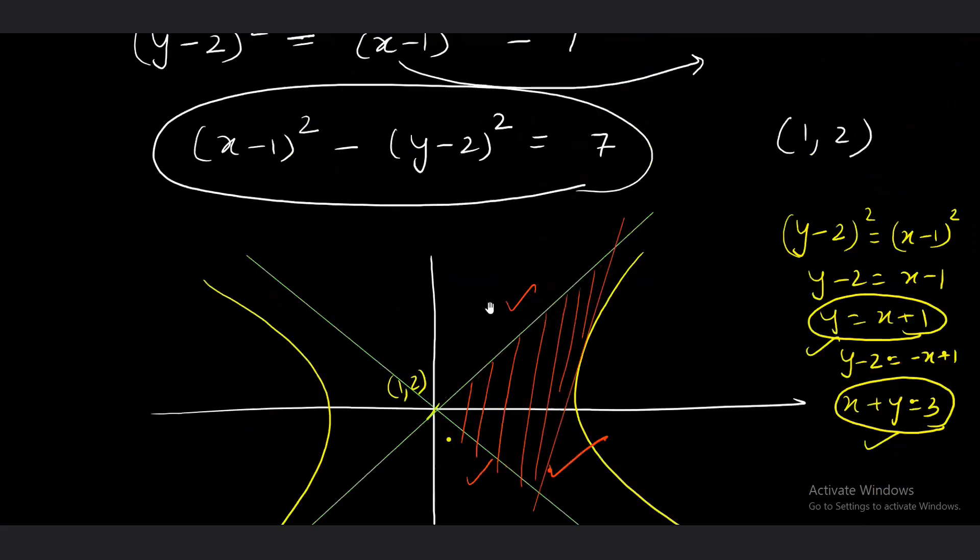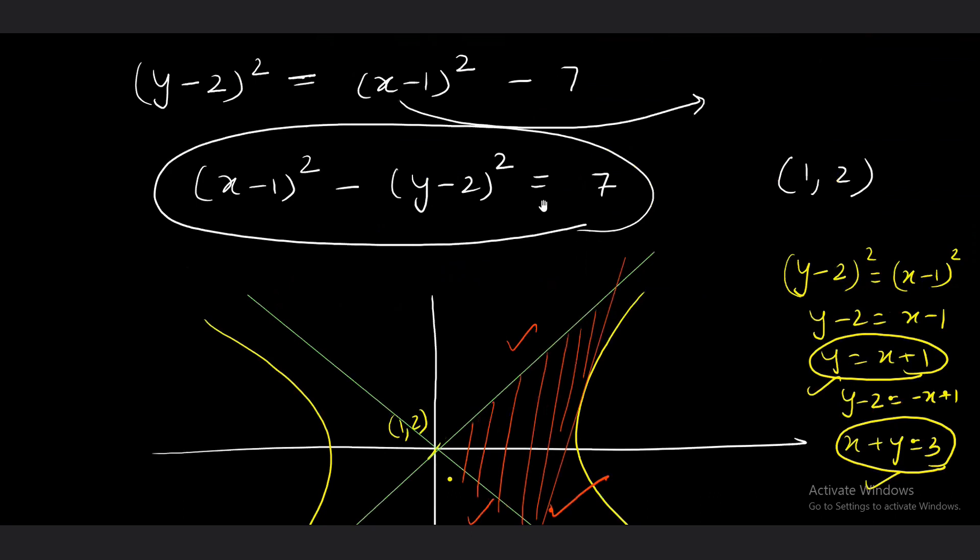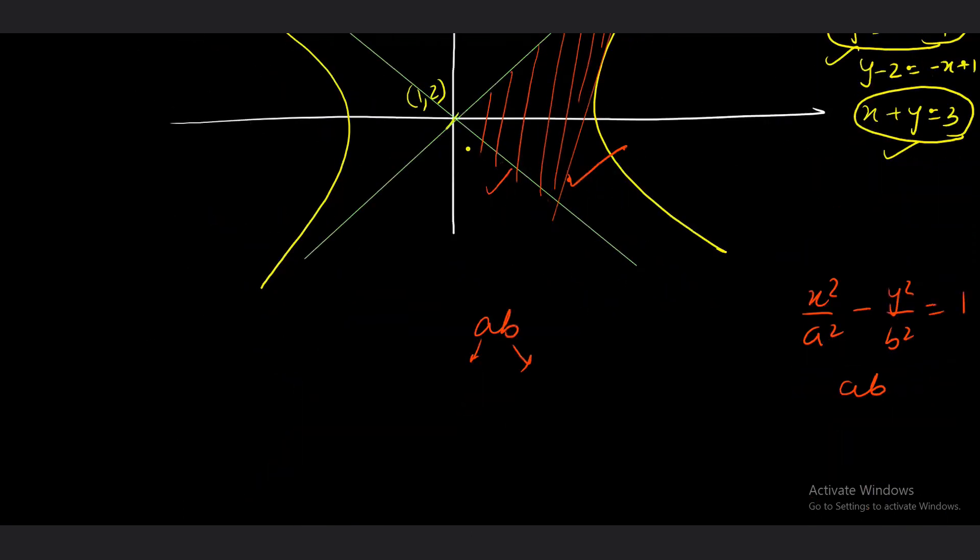Right now, what kind of hyperbola do we have? We have this standard rectangular hyperbola. A and b have the same value. A and b have the same value. So you just put the value accordingly. A and b, this will become a^2. Now what value of a^2 are we getting here? Seven. So, product AB equals 7.